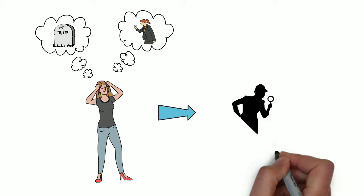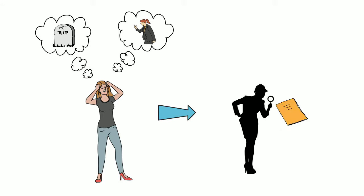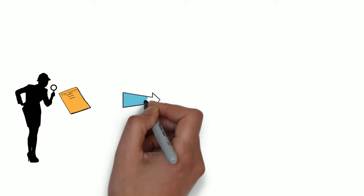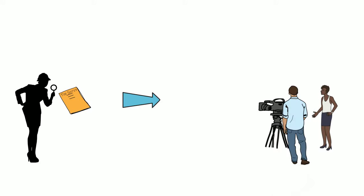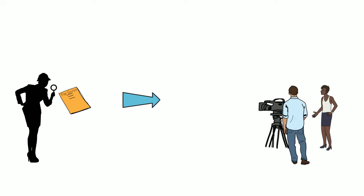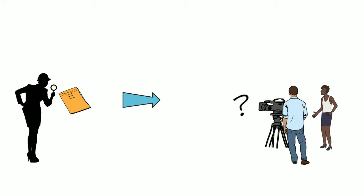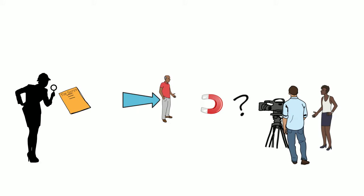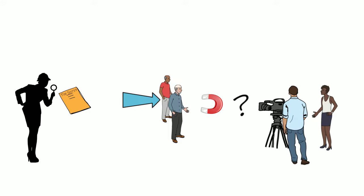This inspired her to research and find out more about the secret, and while researching she had a vision to make a film. Using the principles of the secret, she hired a film crew and flew to America where she knew most of the teachers of the secret lived. She did this without having any teachers confirmed to be in her movie. While in America, events and people were magnetized to her, and this created the secret in just seven weeks with 52 teachers agreeing to be in the movie.